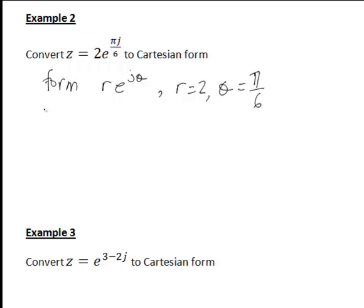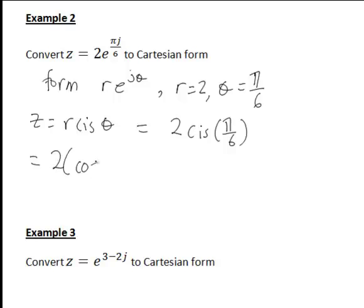So once again we rewrite this in the form r cis θ, which in this case is 2 cis π on 6. And once again, expanding that in terms of cos θ plus j sin θ, this will be 2 multiplied by cos π on 6 plus j sin π on 6.